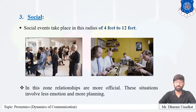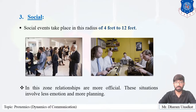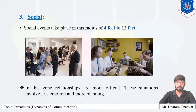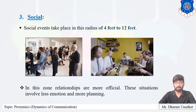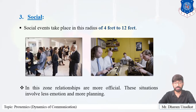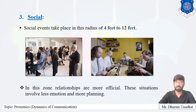The third zone is social. Social events take place within a radius of 4 to 12 feet. In this zone, relationships are more formal and official, and people are more cautious in their movements. This situation involves less emotion and more planning. The number of people decides whether a sitting-sitting or sitting-standing position is used. If the number of people is small and eye contact can be maintained, a sitting-sitting position is used. To be authoritative with a large audience, a sitting-standing position is preferred.